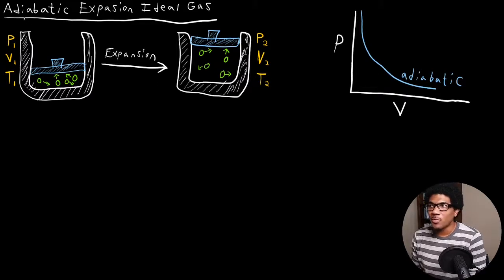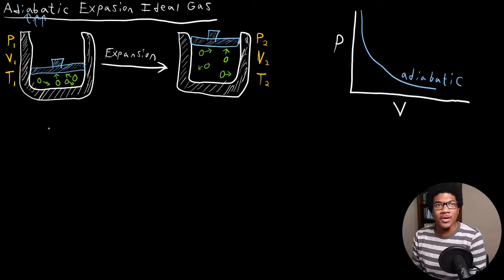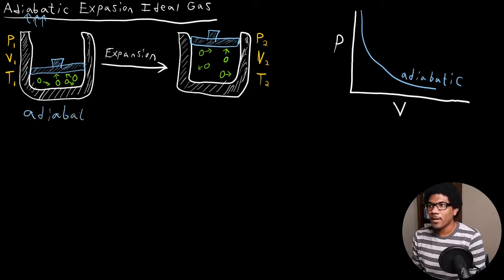Now, what does it mean when we talk about the word adiabatic? That's the only word that's really new here. Adiabatic just means that the system is set up in such a way that there's no heat transfer to or from the system. So for an adiabatic expansion, DQ is going to be equal to zero — there's no heat transferring to or from our system.